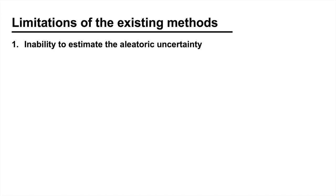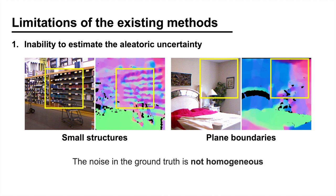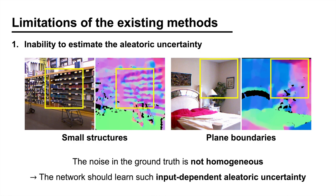However, at the same time, this makes the ground truth unreliable for small structures and plane boundaries. This means that the noise in the ground truth is not homogeneous. Therefore, the network should be able to learn such input-dependent aleatoric uncertainty.